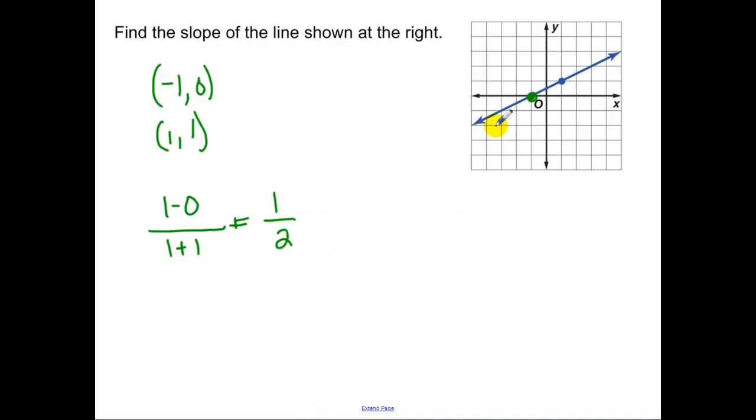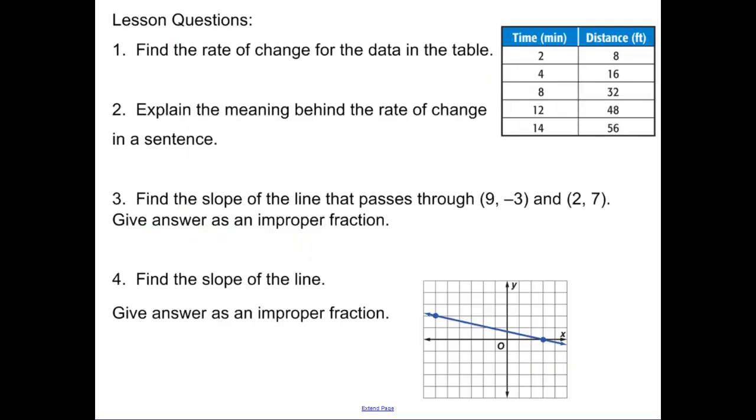Now make sure that makes sense. I go up 1 over 2 to get to my next coordinate. Our line is sloping up positive. So therefore this answer makes sense. There are your 4 lesson questions for the day. And please make sure your lesson questions and your summary is submitted on time.